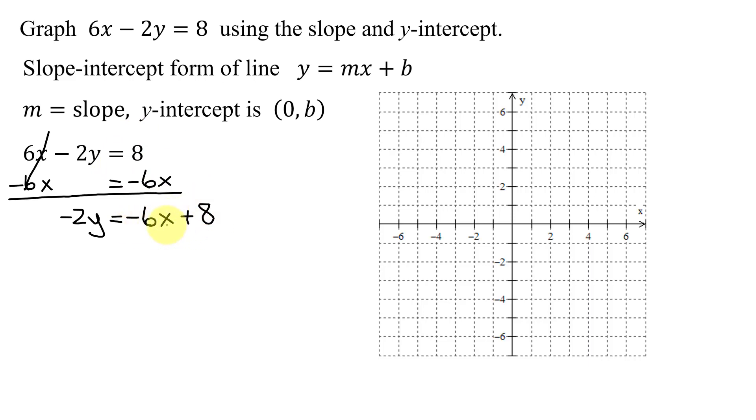I want to write the x term first so I can get it in the form of y equals mx plus b. Now, to get y by itself, I need to divide both sides by negative 2, and on the right-hand side, you make less mistakes if you divide each term individually by negative 2.